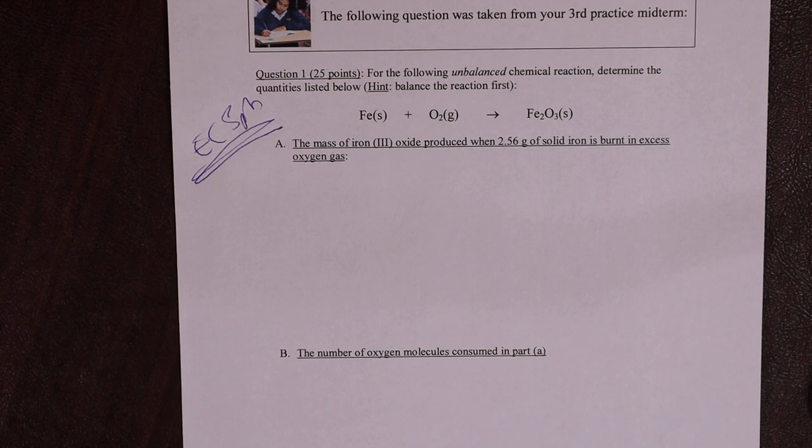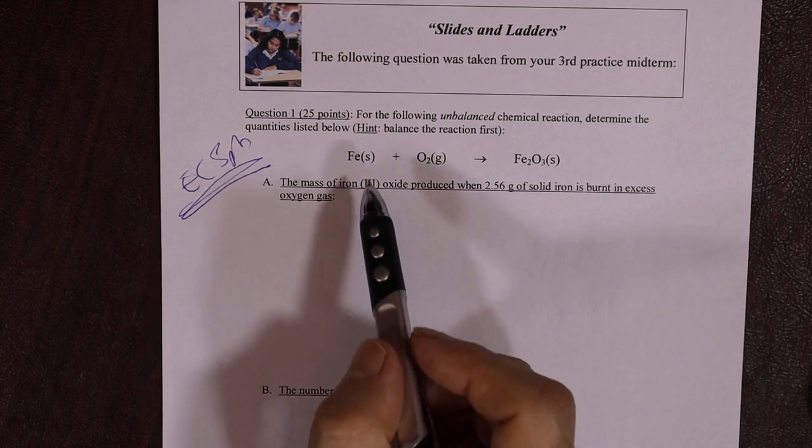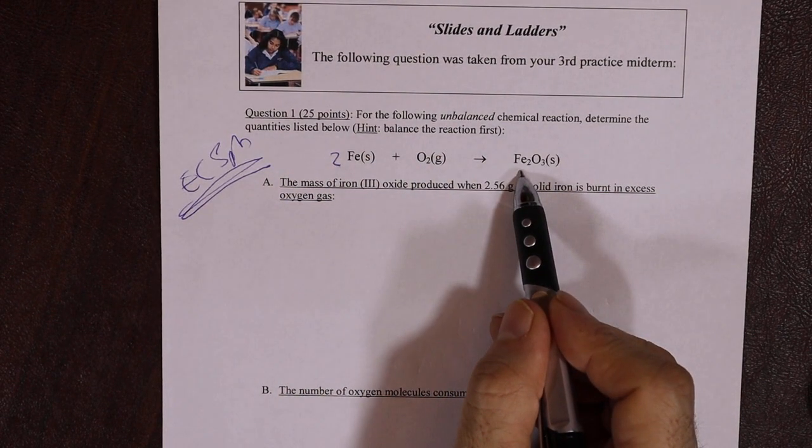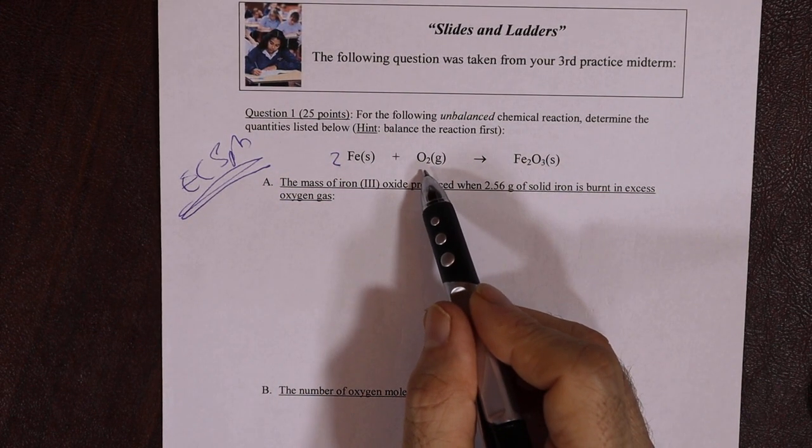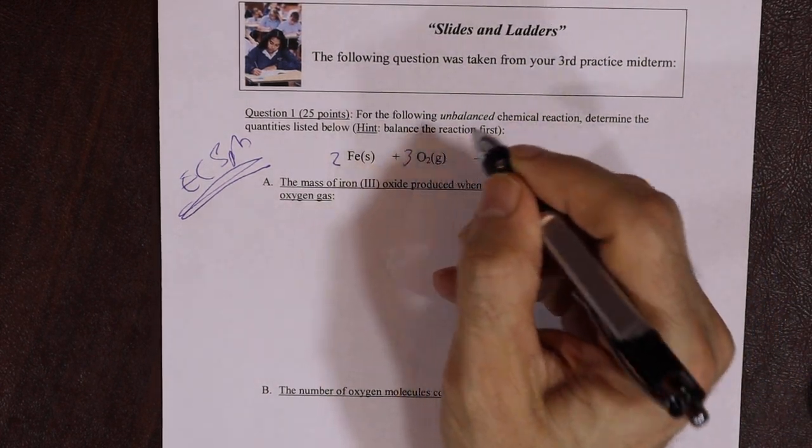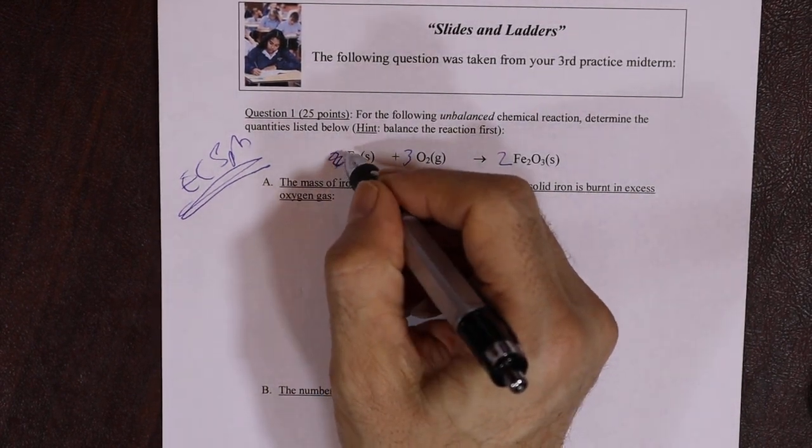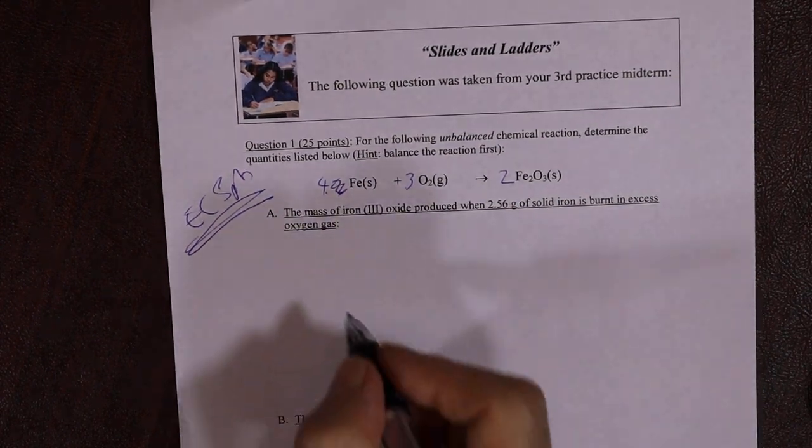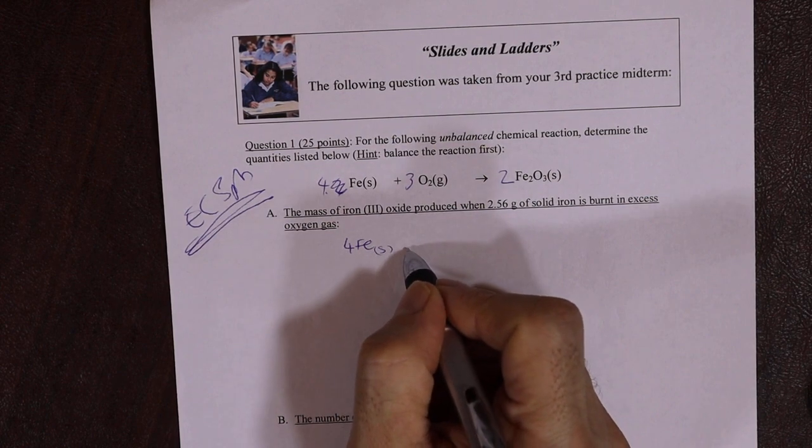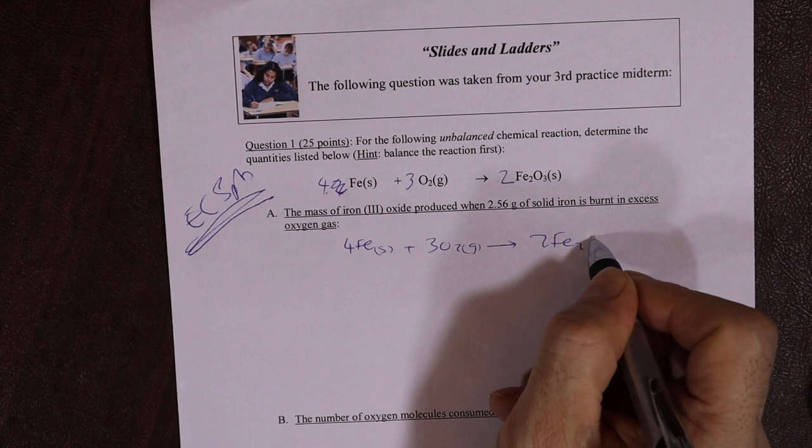Okay. So let's balance this one together. If it's balanced, you guys will be able to do this quite straightforwardly. So iron, iron, two there, two there. Oh, but wait a minute. It's three oxygens, two oxygens. Oh, it's the whole three, two thing. So I need two threes and three twos. Six oxygens, six oxygens, but now I've got four ions. So that's to be a four there. Okay. So what you're going to do, you're going to set up a slide and ladders with four Fe plus three O2 gas goes to two Fe2O3.